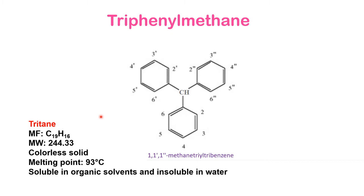This substance is also called tritane, and when present as a substituent it is called trityl. The carbocation or free radical forms are also called the trityl cation or trityl radical.